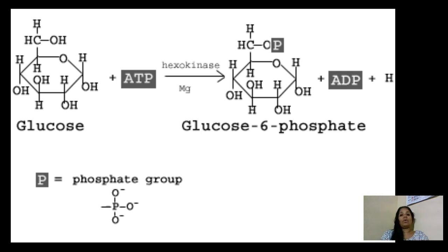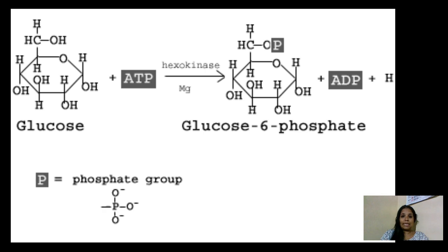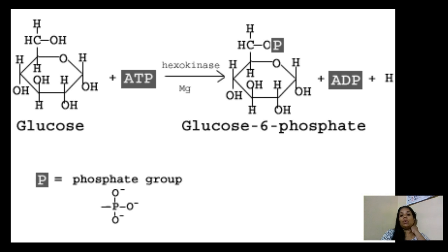An important point is that glycolysis can take place either in the presence or absence of oxygen — the presence of oxygen is not mandatory. If the cell is in aerobic conditions, the pyruvic acid formed will enter the Krebs cycle. However, if the cell is in anaerobic conditions, oxygen is lacking and the Krebs cycle cannot take place, so the pyruvic acid — the end product of glycolysis — will be converted into lactic acid.